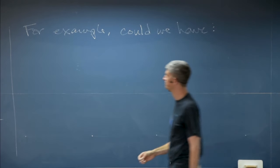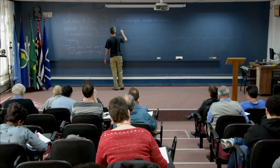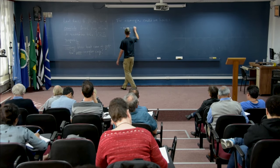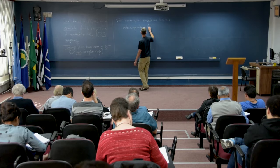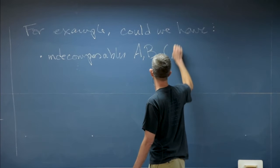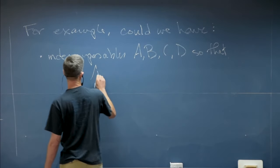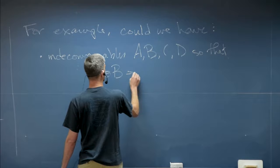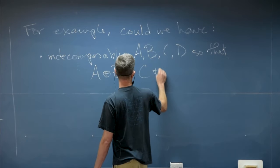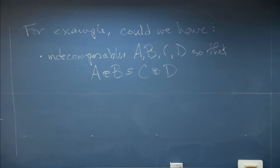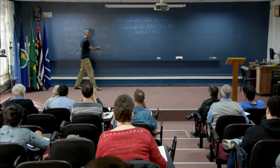Could we have indecomposables A and B and C and D so that A direct sum B is isomorphic to C direct sum D, but not any of the pairwise ones? Obviously, yes, because if this never happened, then all of the rings would satisfy Krull-Schmidt.